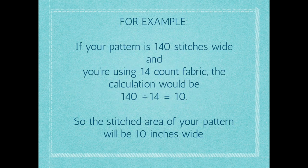So for example, if your pattern is 140 stitches wide and you're using 14-count fabric, the calculation is: 140 stitches divided by the thread count of 14 equals 10. So your stitched area of your pattern is 10 inches wide. You take your number of stitches, divide that by your thread count, and that equals how many inches your stitched area will be.